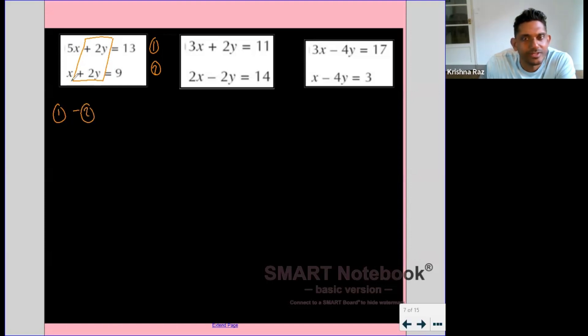We will have 5x take away x is 4x. We'll have nothing when we subtract 2y from 2y, and we'll have 13 take away 9 is 4. So in other words, the difference between those two equations is 4x equals 4, which then leads to us seeing that x must equal 1.